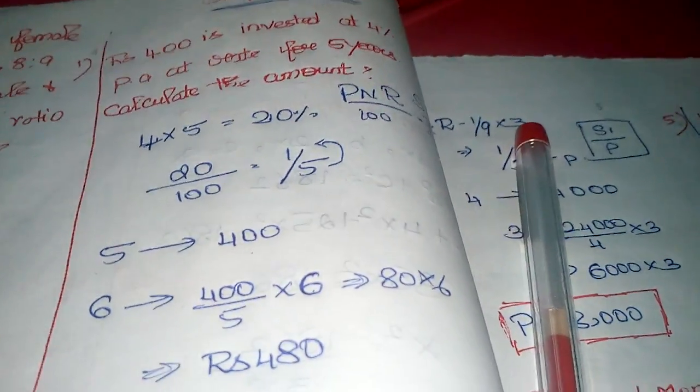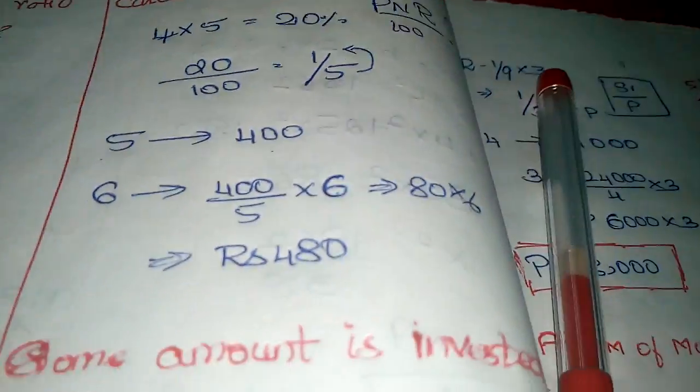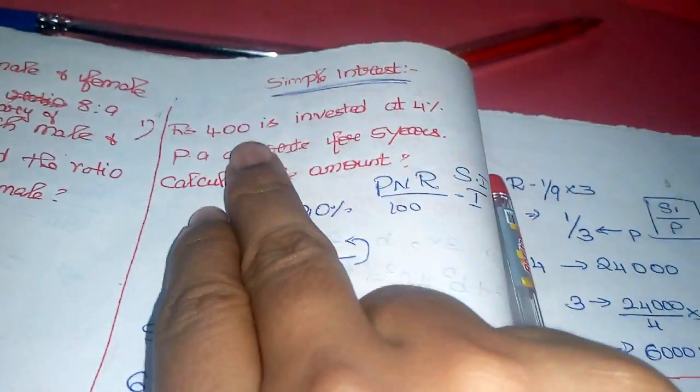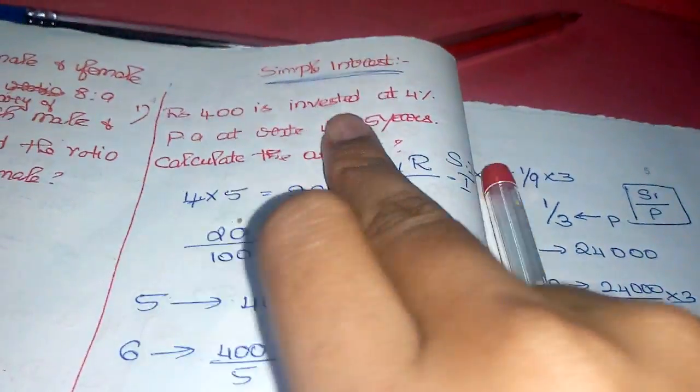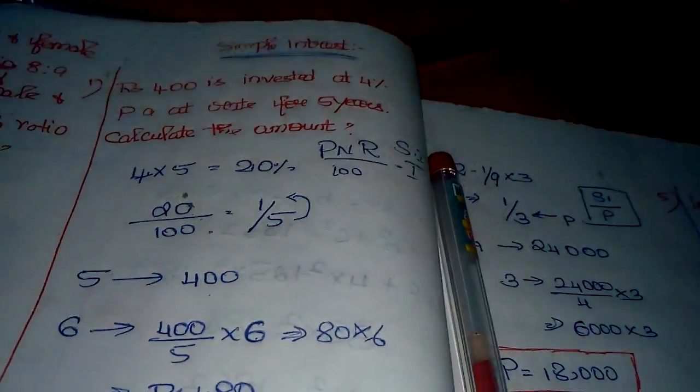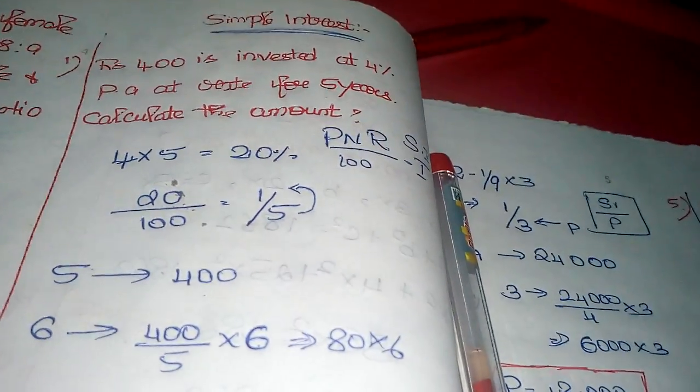First sum I'll show you: Simple interest with short tricks and formula-based methods. First problem: Rupees 400 is invested at 4 percentage per annum for 5 years. Calculate the amount. 400 is invested at 4 percentage per annum.